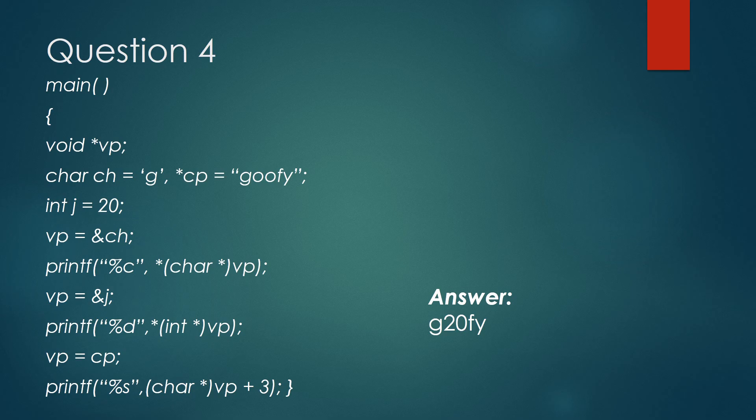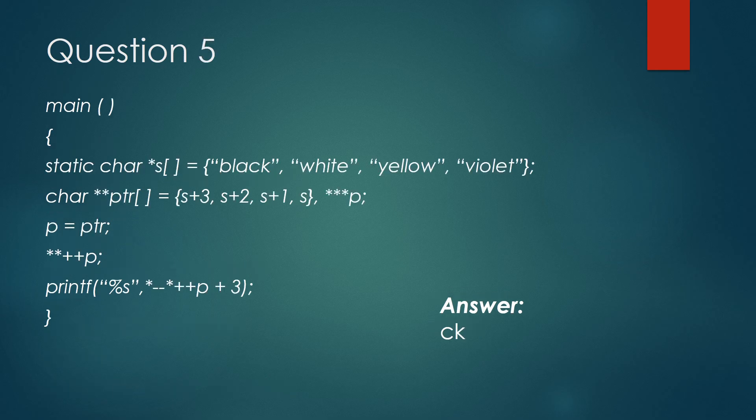Let's come to the fifth question. In this problem we have an array of char pointers pointing to the start of four strings. Then we have a pointer which is a pointer to a pointer of type char. Then again we have a variable p which is a pointer to a pointer to a pointer of type char. p holds the initial value of ptr that is s + 3.